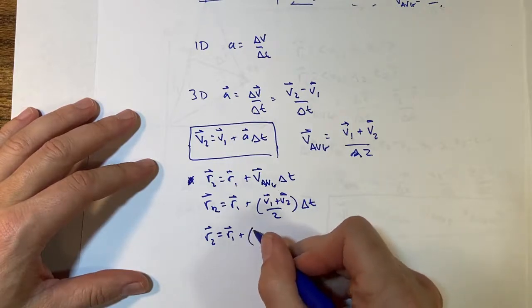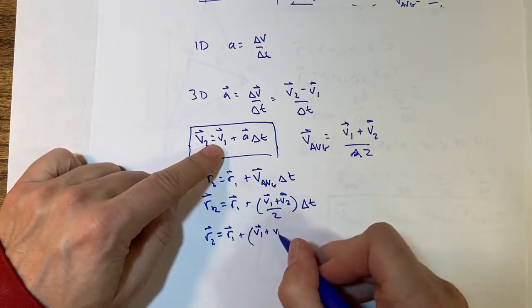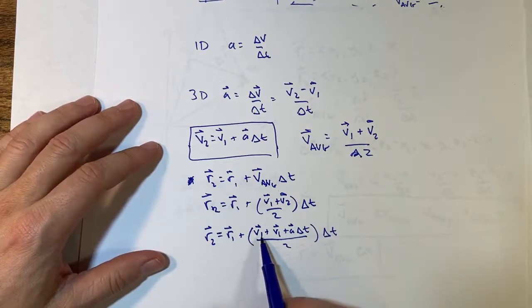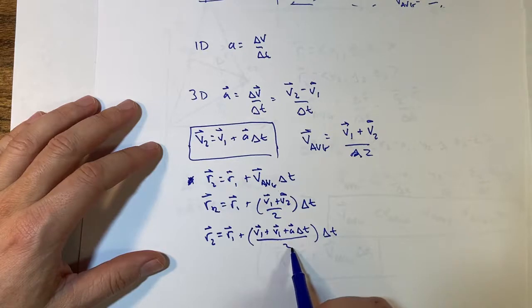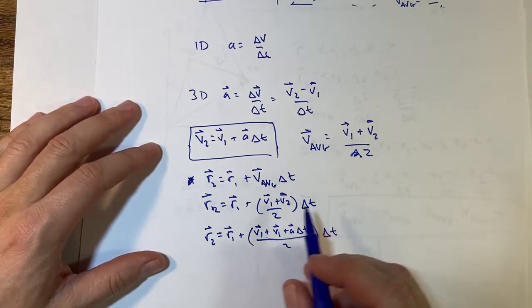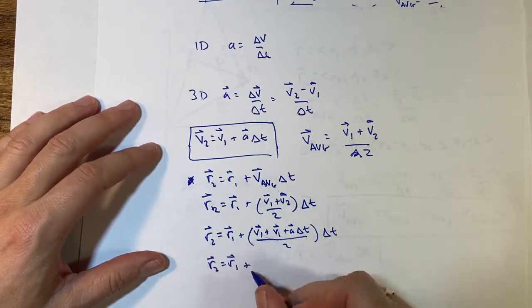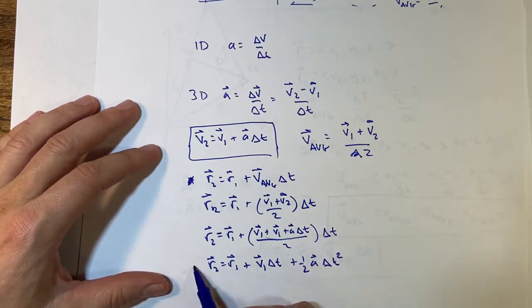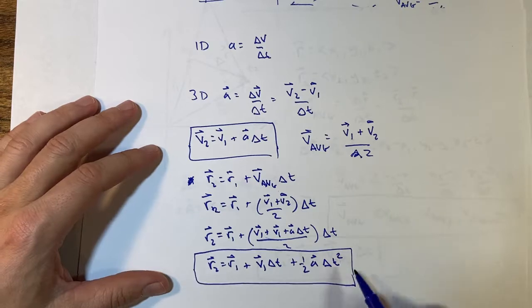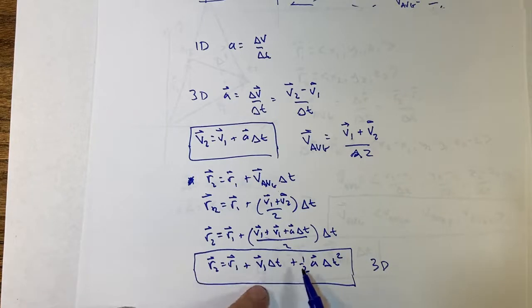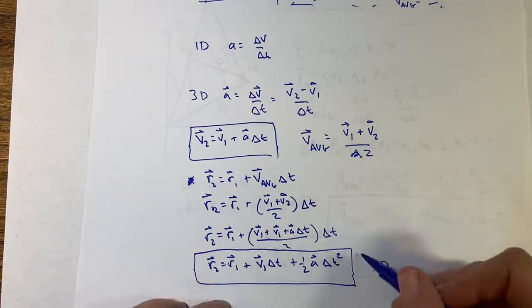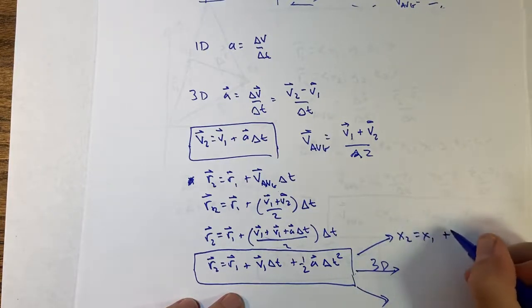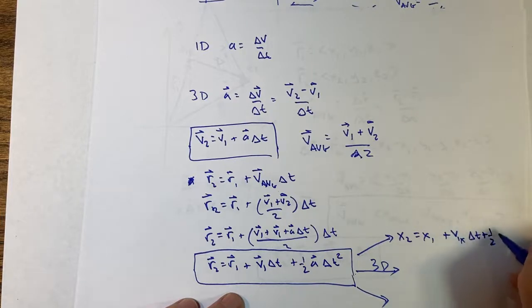Now substituting in for v2: r2 equals r1 plus (v1 plus v1 plus a·delta t), all over 2, times delta t. Multiplying out: I have two v1 terms, giving v1·delta t, and then one-half a·delta t squared. So r2 equals r1 plus v1·delta t plus one-half a·delta t squared.